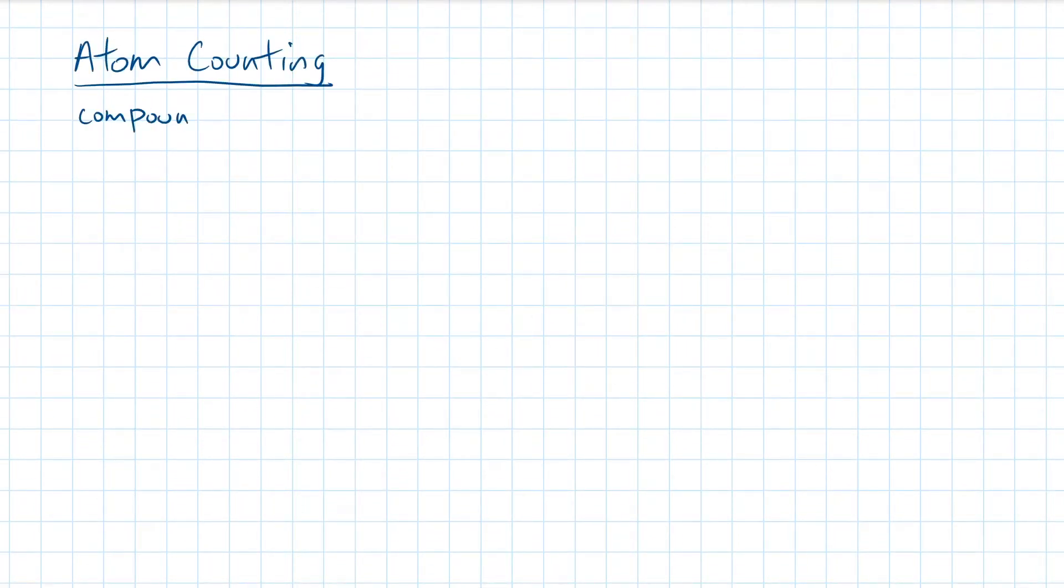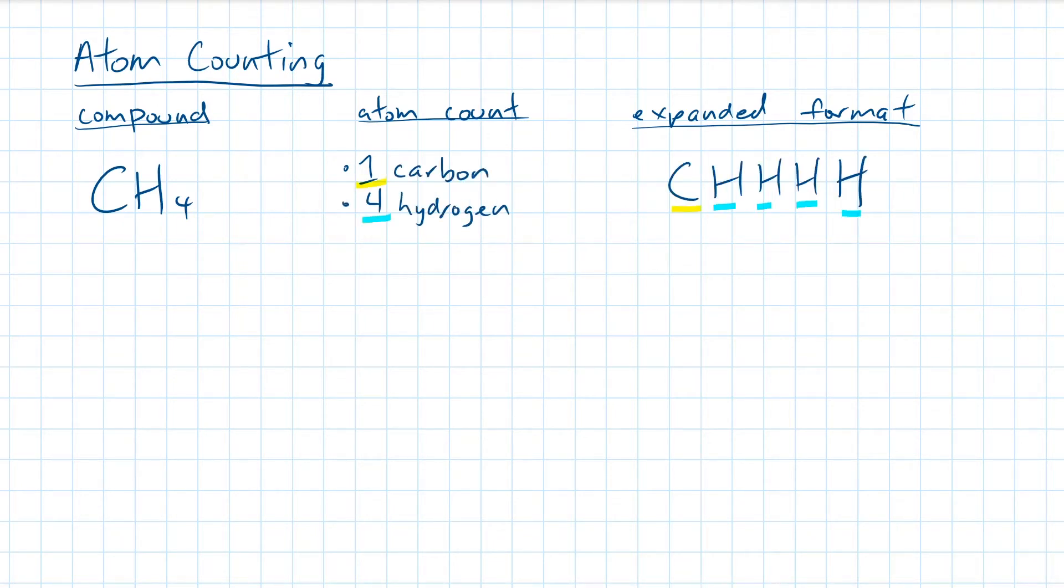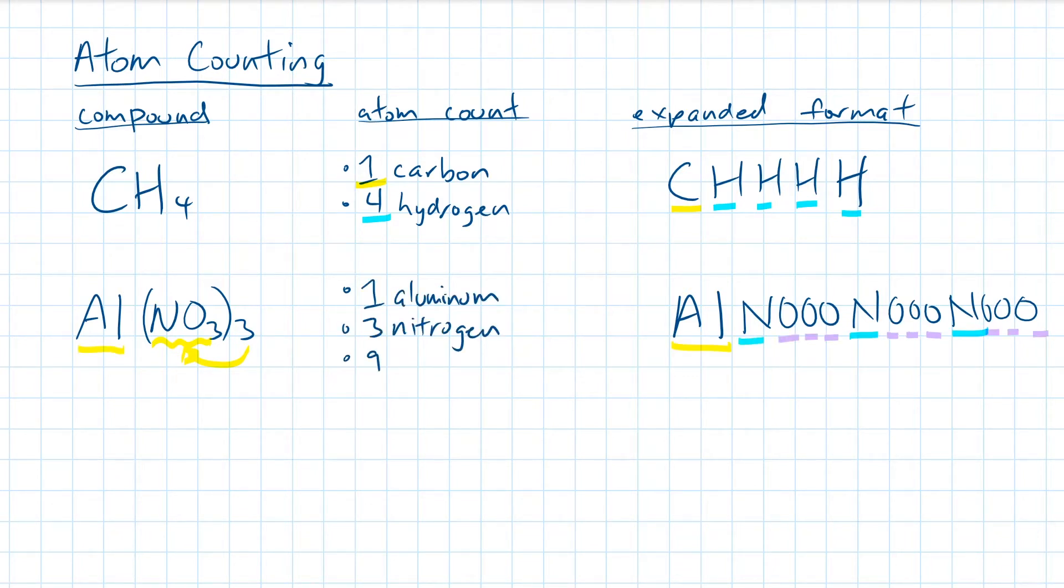Let's practice through a few atom-counting examples. CH4 is a molecule of methane. Methane contains 1 carbon and 4 hydrogens. Al(NO3)3 is the polyatomic compound aluminum nitrate. Aluminum nitrate contains 1 aluminum, and remember the 3 out here is telling the reader that we need 3 times the quantity of what's needed inside the brackets. Sometimes it helps to expand the formula to visually see how many atoms are needed. So we have 1 Al and 3 sets of NO3s. In the expanded format, we count 3 nitrogens and a total of 9 oxygens.